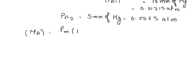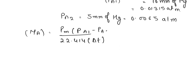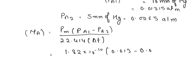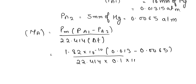We can calculate the value of flux. NA is equal to PM divided by 22.414 (our constant), divided by the thickness, multiplied by PA1 minus PA2. Substituting the values: 1.82 into 10 to the power minus 10, multiplied by (0.013 minus 0.0065), divided by 22.414 multiplied by 0.1 into 10 to the power minus 3.